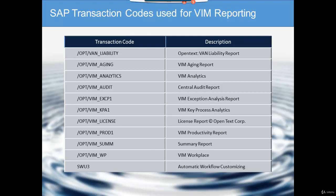The fourth one is the Audit Report. It tells who did what — this is very useful for year-end internal audits and when external companies are auditing your vendor invoices.